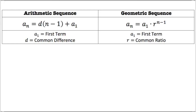For arithmetic sequences, the formula is a-sub-n equals d times (n minus 1) plus a-sub-1. Remember a-sub-1 is the first term in the sequence. D stands for the common difference, which you find by subtracting the second number from the first number.